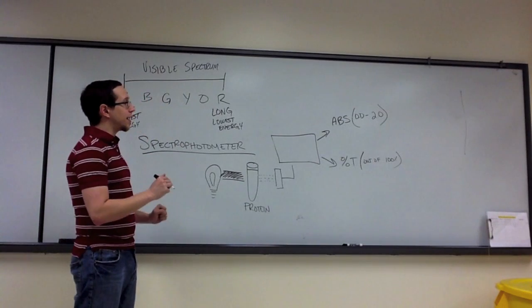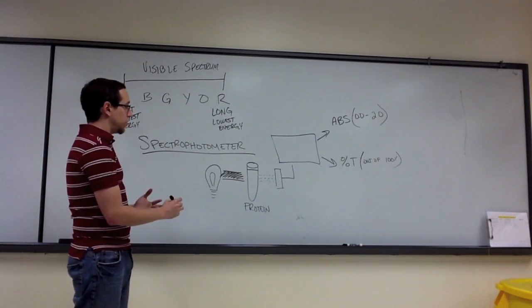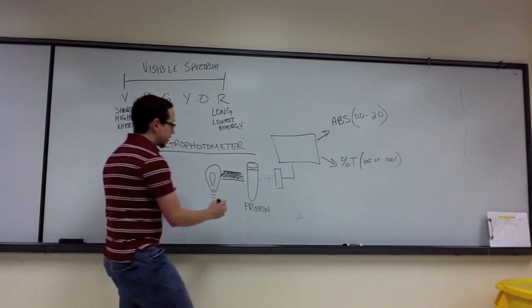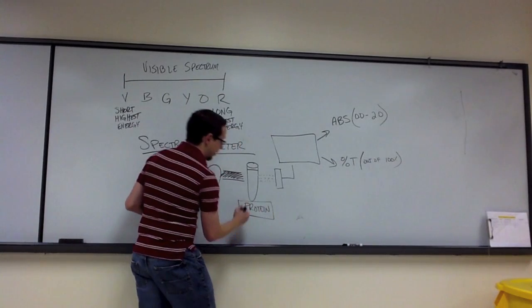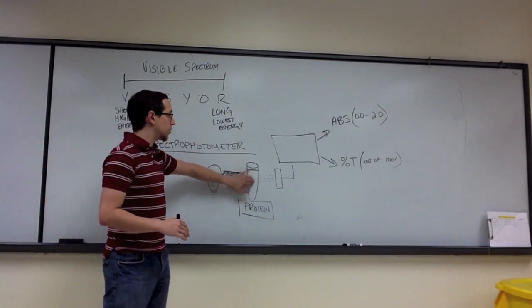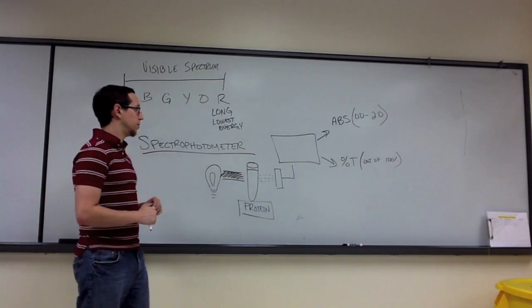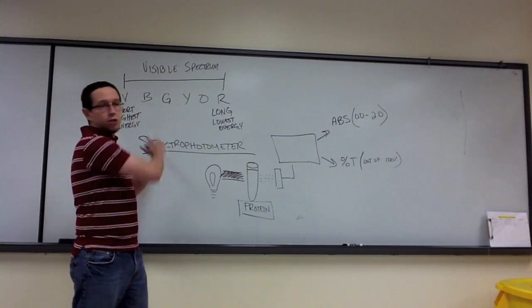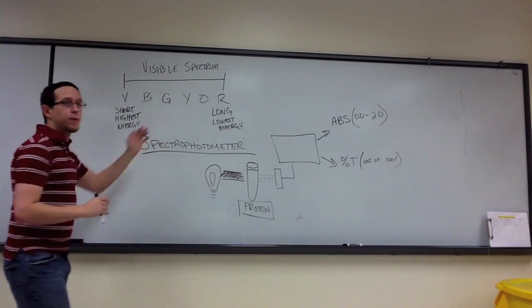Now, what I'll show you next in the next part of the review is how we actually know that what we're looking at is just the protein and not any of the other elements that we have in this test. This is the general principle of spectrophotometry.